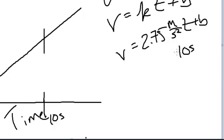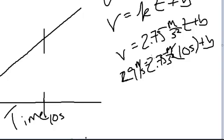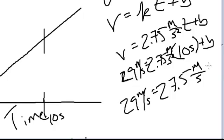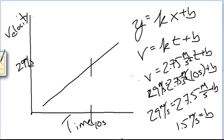Now, if I just put in my t, 10 seconds, times my slope, and over here is my 29 meters per second. The only thing I have left is b. So I do a little bit of algebra here to get 27.5 meters per second, because the s squared cancels with the s. And 29 meters per second on the other side. And I find that my b is 1.5 meters per second.